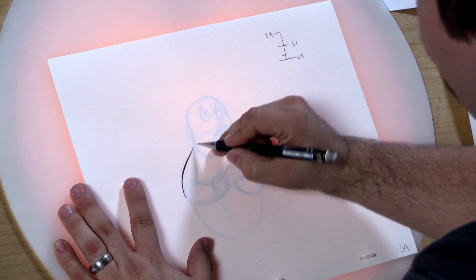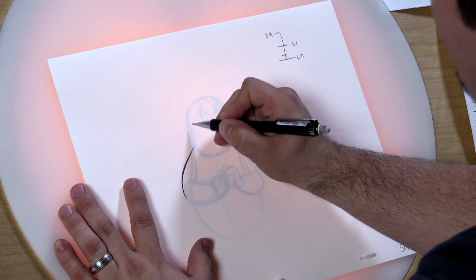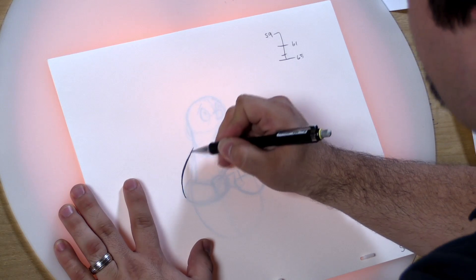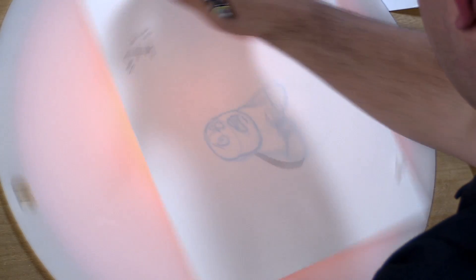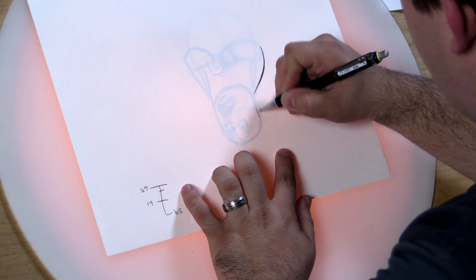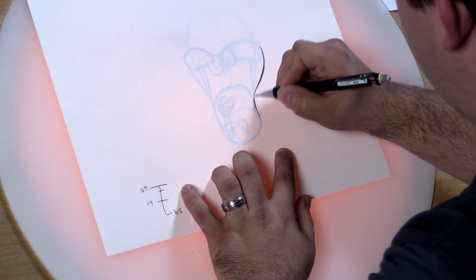Now you'll notice that as we get to this section, we're going to hit a kind of line that goes against our natural arc of our wrist. So this is why animators work on a disc. We can turn and then continue to use that wrist action. It's very convenient.